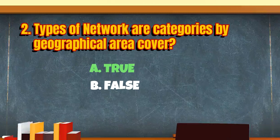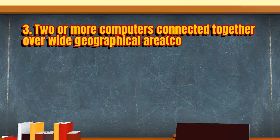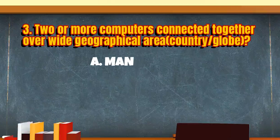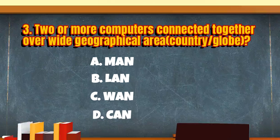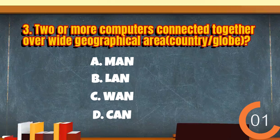Two or more computers connected together over a wide geographical area, such as a country or the globe, is what kind of network? A. Metropolitan area network. B. Local area network. C. Wide area network. D. Campus area network. You are correct. The answer is wide area network.